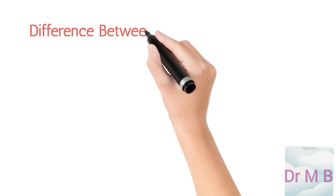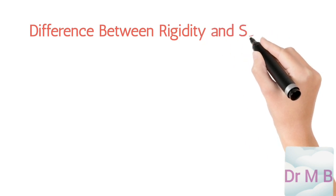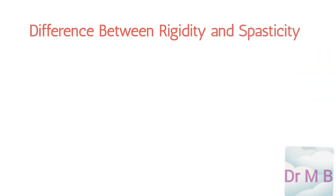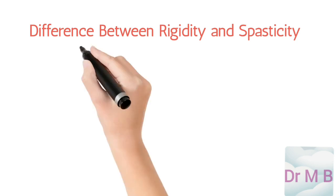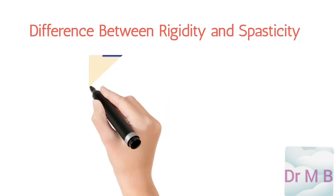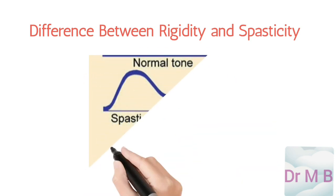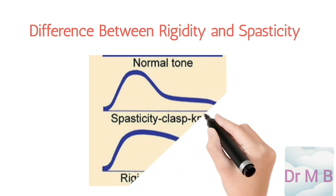Bismillahirrahmanirrahim, assalamualaikum. Hi everybody, today I am going to talk about differences between rigidity and spasticity. But first of all, I would like to define tone. It is defined as the resistance offered by muscles to passive movement. Tone can be hypotonia, meaning decreased tone, which we see in lower motor neuron lesion and cerebellar lesion.